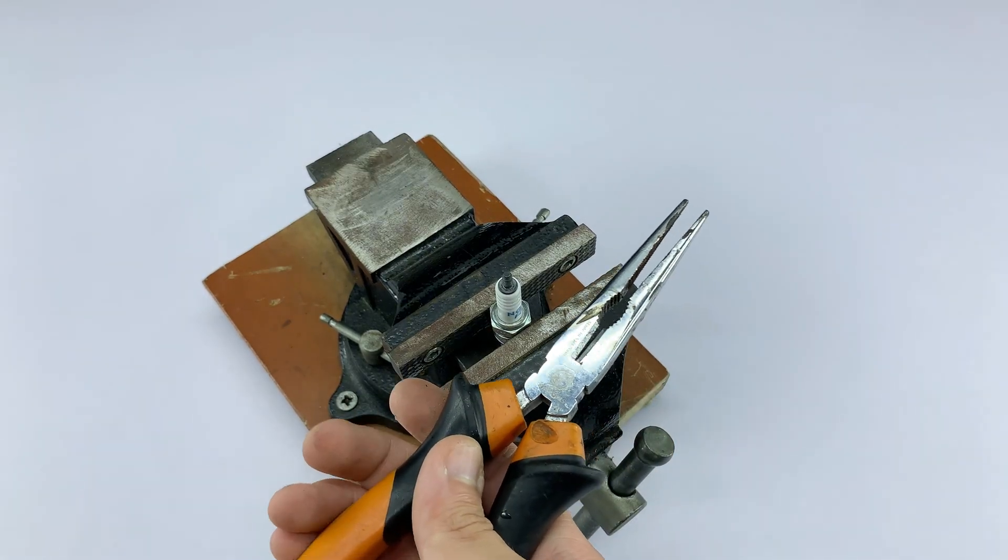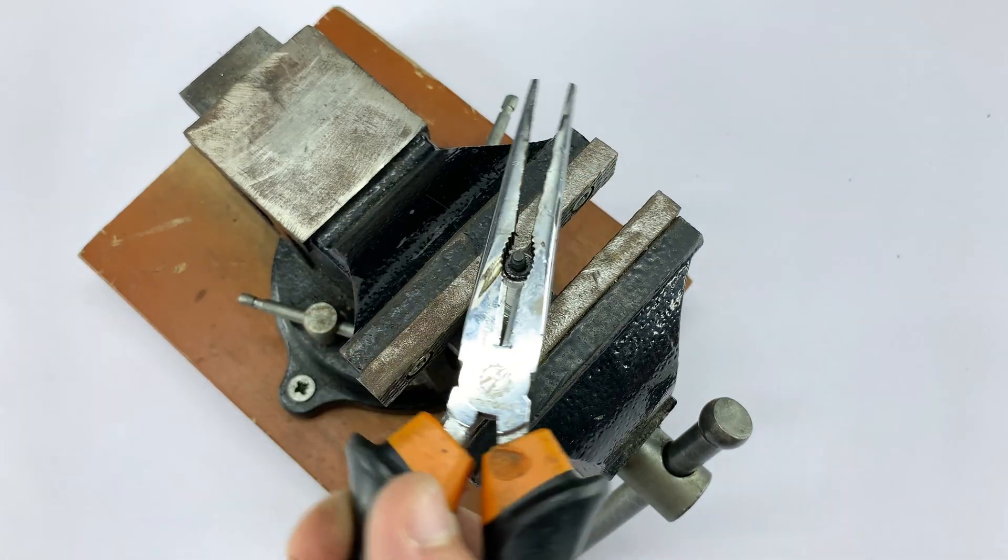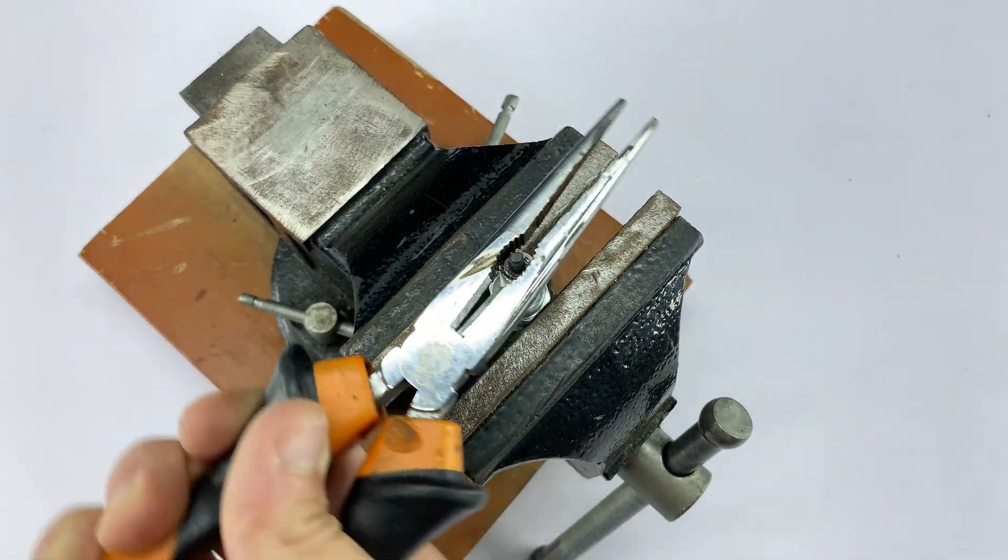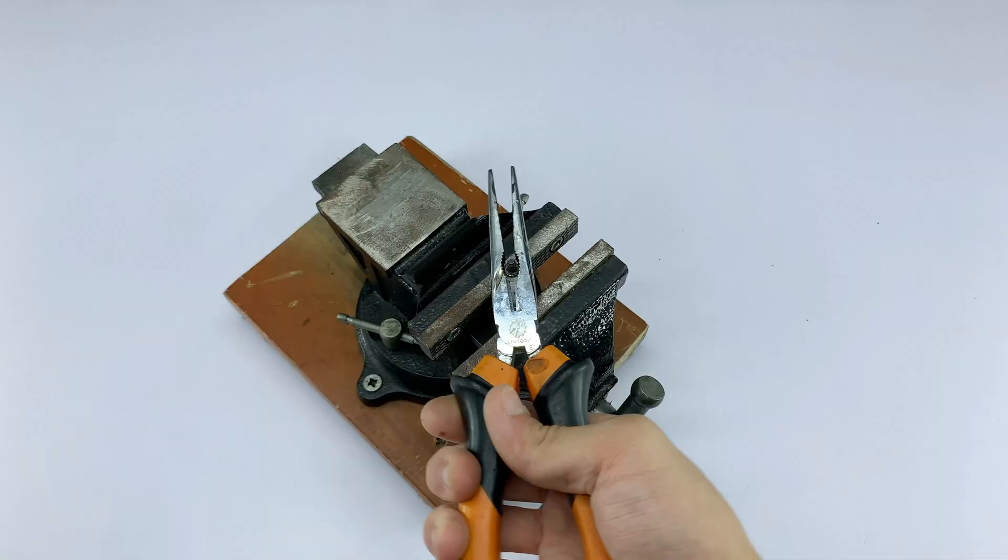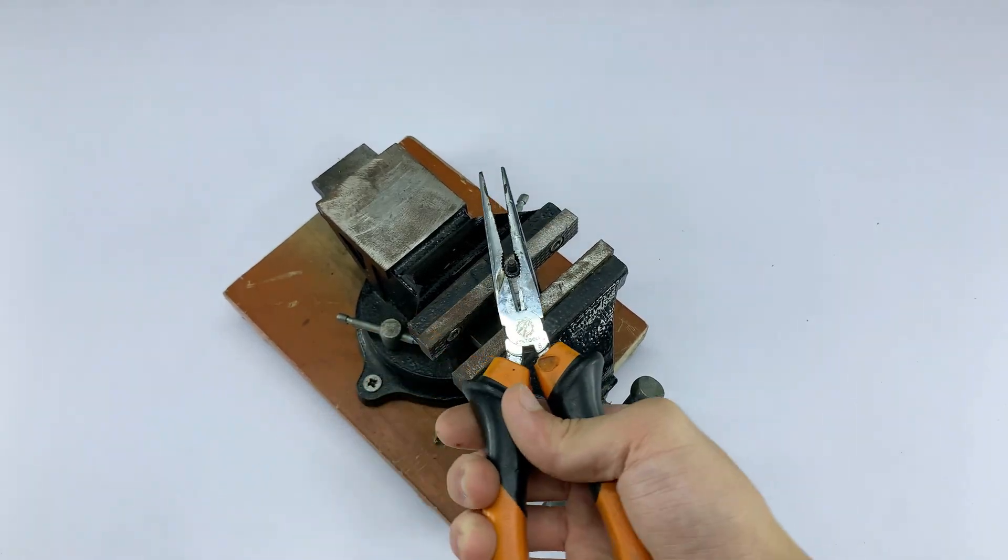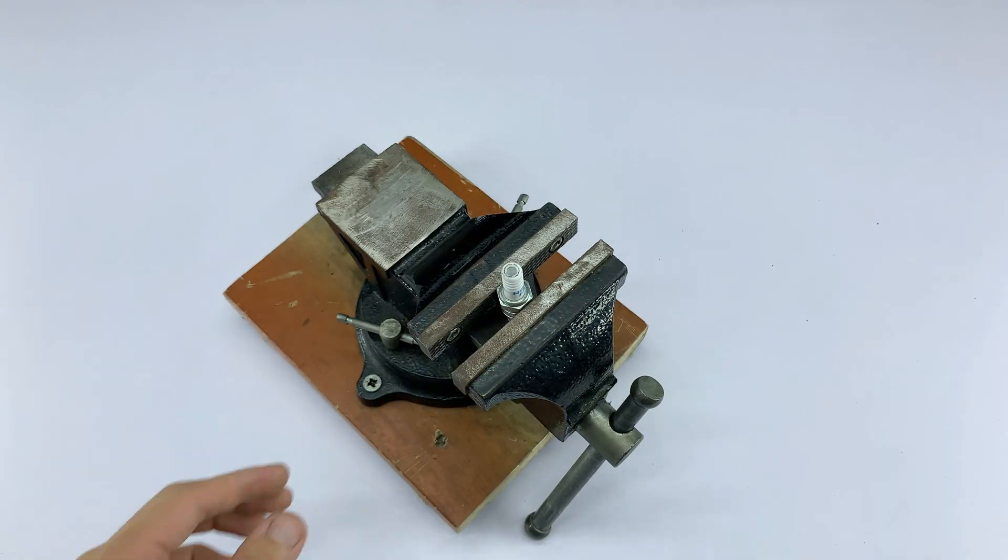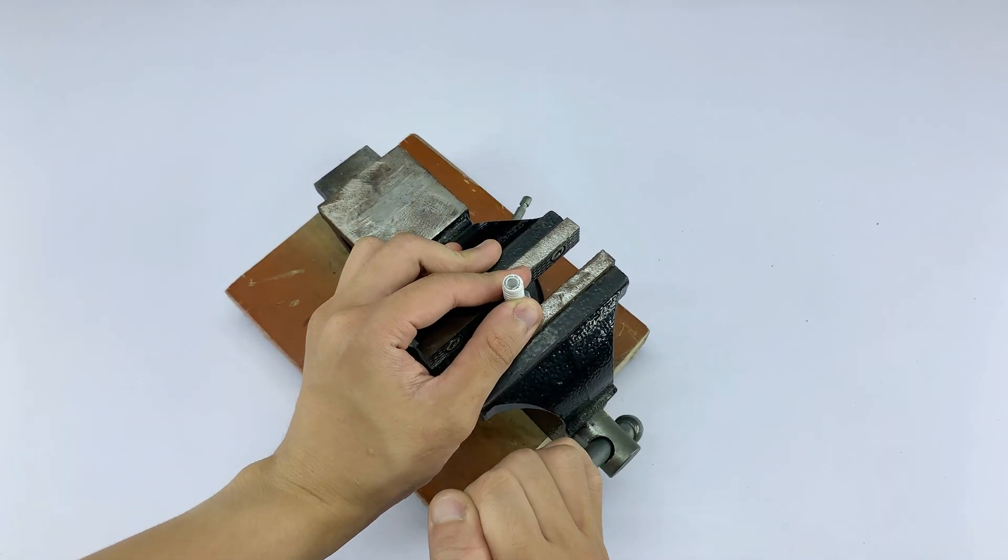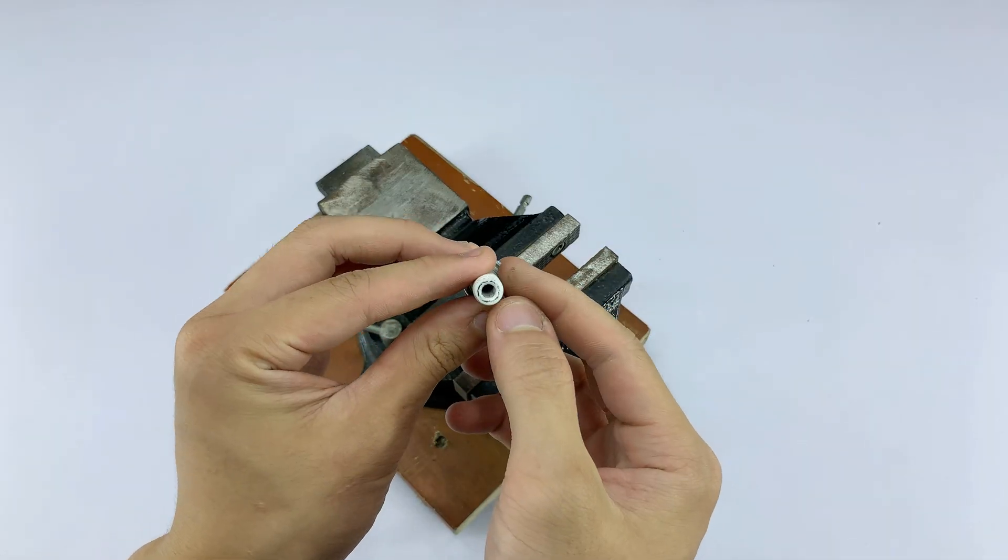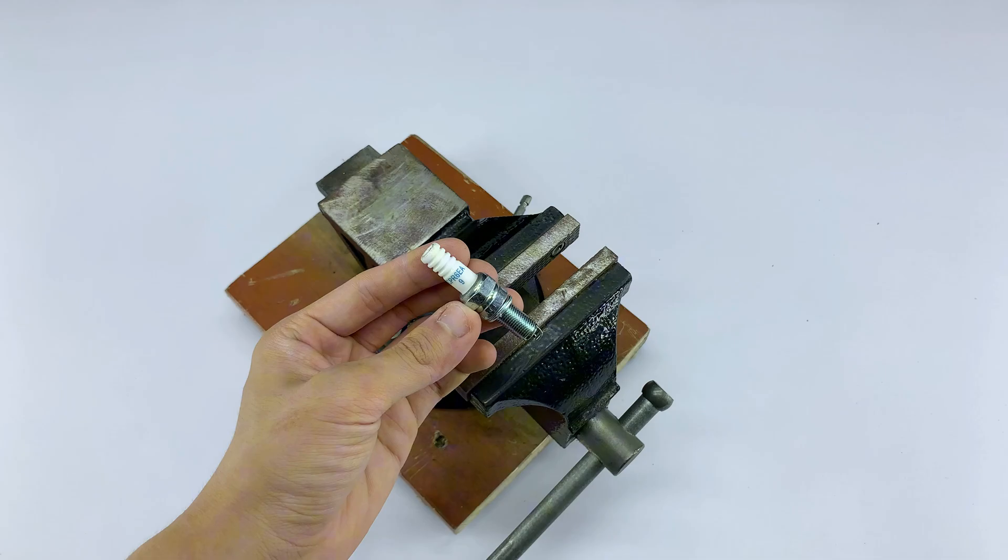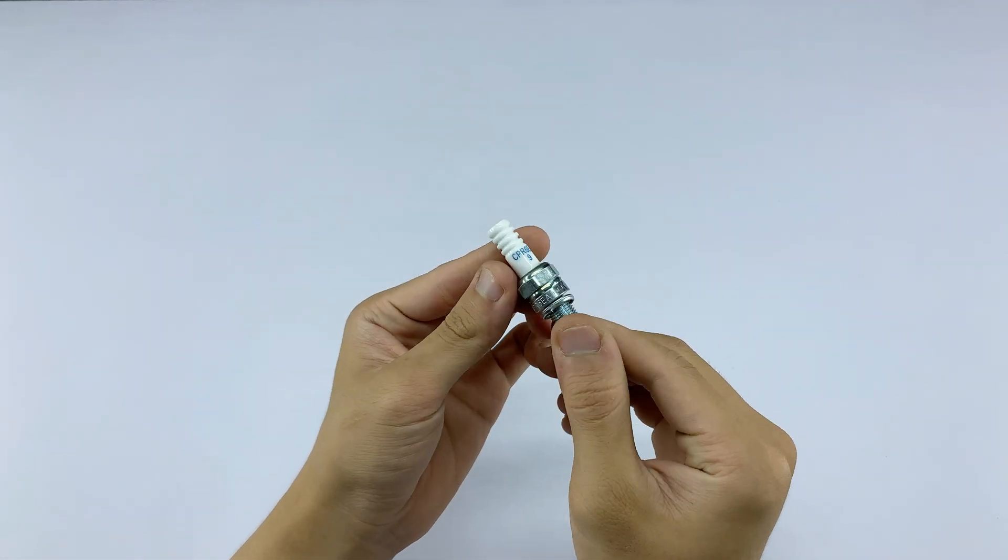First, I'm grabbing the spark plug by its threaded end with a pair of pliers. Then, I slowly twist and pull out the inner core. Here's the key: take your time. If you yank too hard, that ceramic core can crack or break. A steady, gentle motion is all you need. Once the core is out, what we've got is a hollow spark plug, pretty much a neat little tube now. This outer shell will serve as the frame for what we're building next. So keep it safe and make sure it stays in good shape.